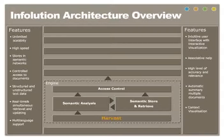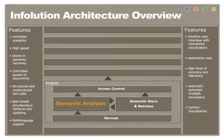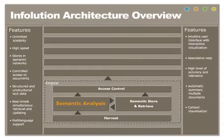The harvest unit converts data from various sources into an internal format for InFolution. In semantic analysis, the converted data, including documents, is analyzed, resulting in semantic networks. For each document, a network and an index are created. Then the individual networks are integrated. Common clustering techniques are used in order to recognize the various meanings a particular concept may have.